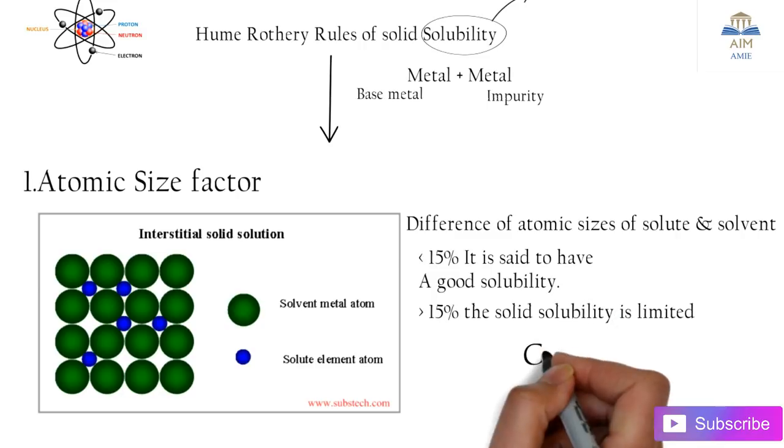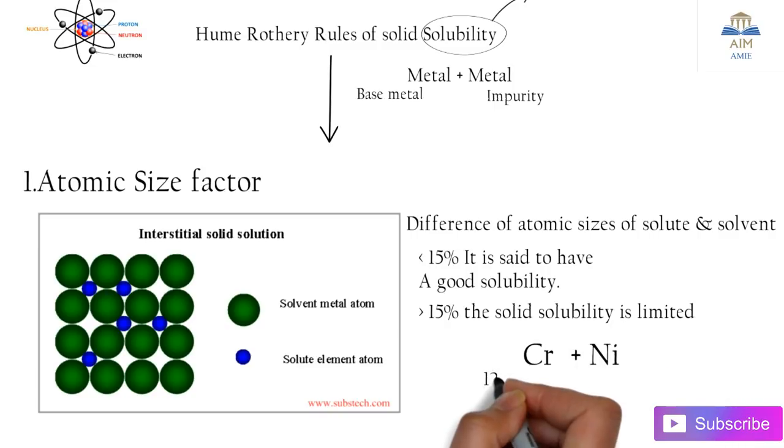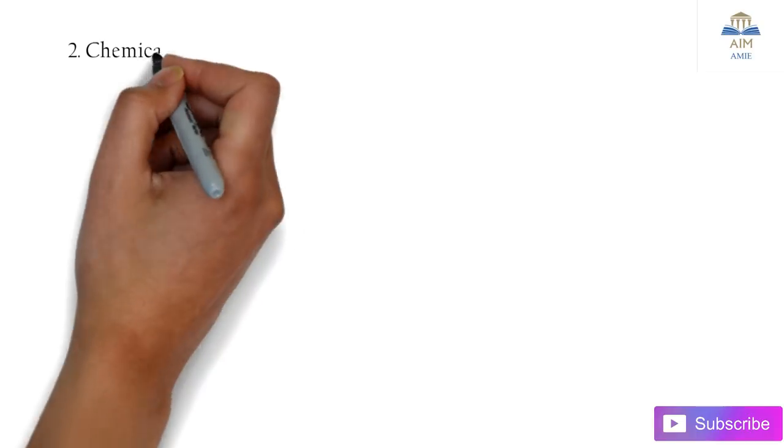Let's take an example: chromium and nickel. The size of chromium is 128 picometer, whereas the size of nickel is 128. It's almost the same, so the solubility for these two is good.